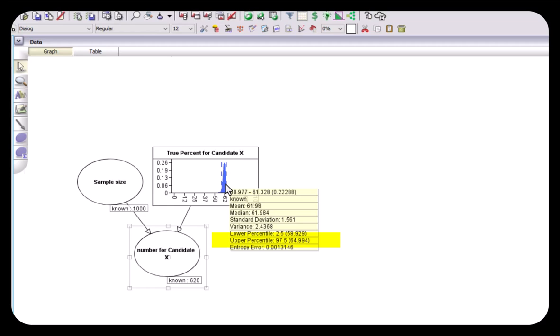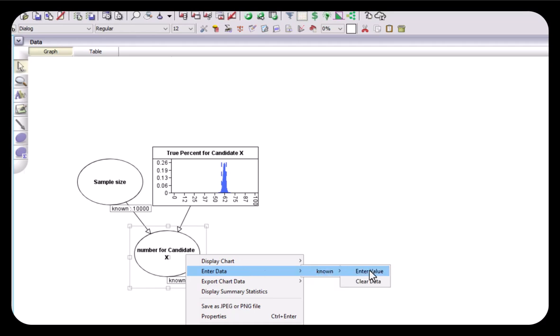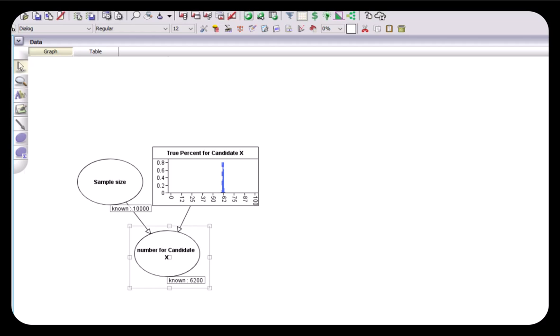And if we go to a very large sample size of 10,000 and we get 6,200, when we run the model you can see that this is almost exactly 62 percent and the confidence interval goes from just over 61 to just under 63 percent. There's still a bit of uncertainty but not a great deal of uncertainty there.